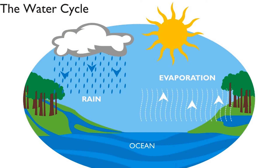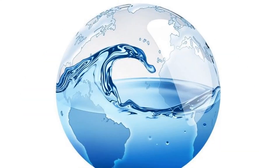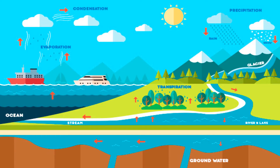The water cycle is also called the hydraulic cycle — the cycle that involves the continuous circulation of water in the Earth's atmosphere system. Of the many processes involved in the water cycle, the most important are evaporation, transpiration, condensation, and precipitation. Although the total amount of water within the cycle remains essentially constant, its distribution among the various processes is continually changing.